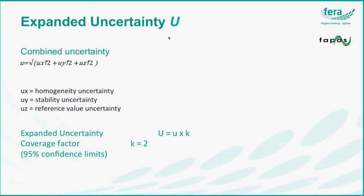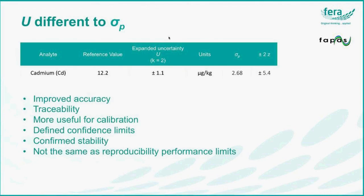For simplicity, the coverage factor equals 2, so the expanded uncertainty is the uncertainty multiplied by that coverage factor. This is standard practice across the majority of analytical chemistry. You can see in this example that the expanded uncertainty is 1.1, compared to the standard deviation for proficiency of 2.68. That means the uncertainty of the reference value is much closer and with a tighter boundary than the performance limits, which represent the required reproducibility of an analysis.